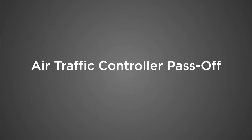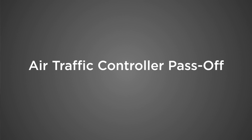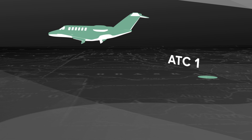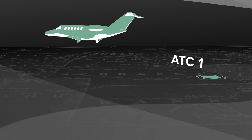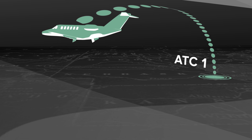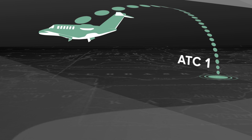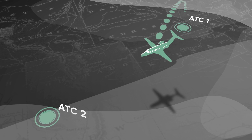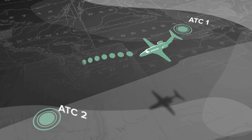While the aircraft is flying along, when it is time for the primary air traffic controller to hand off the aircraft to the next authority, the primary air traffic controller will send a message to the aircraft. The aircraft then takes that message and sends it along to the next authority.